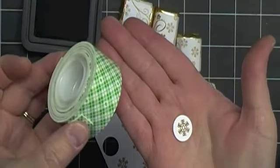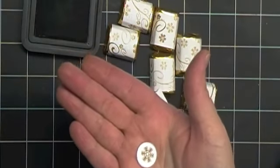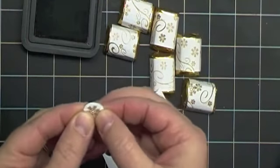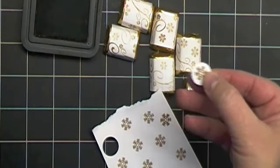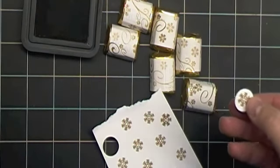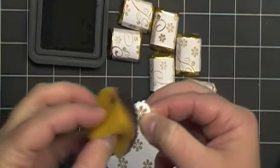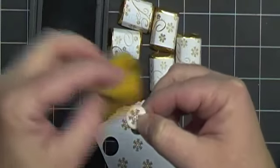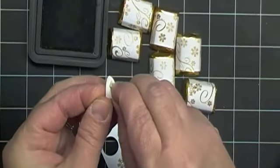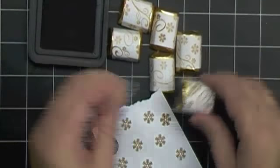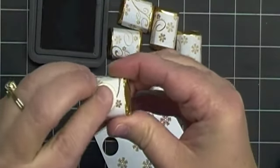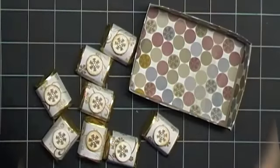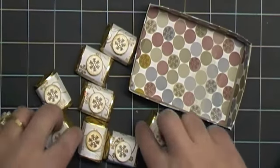And then I'm going to go ahead and use my mounting tape. A small square of my mounting tape. Put on the back of there. And before I do that I'm going to go ahead and take my sponge and just ink a little bit around the edge of that Snowflake circle. Take my mounting tape off the back and pop it right on the top of my Hershey Nugget. And I'm going to go ahead and do that to all of the Hershey Nuggets.